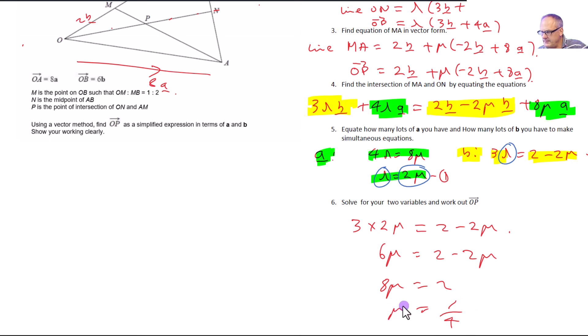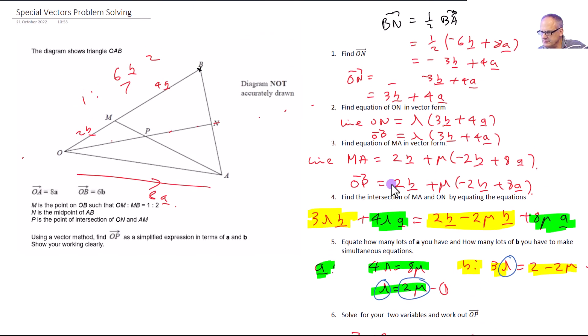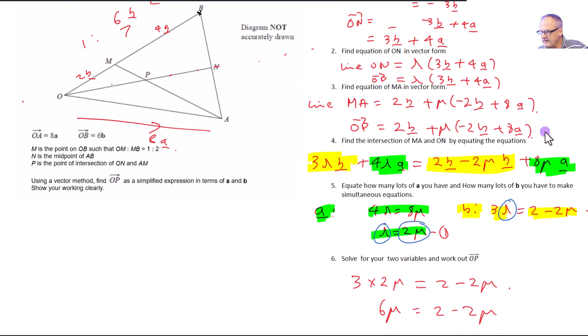So I can put that mu back into my equation, which is based on mu, so this one here, and find out OP. So OP must equal 2B plus a quarter times minus 2B plus 8A, and we can simplify that. So a quarter minus 2B is minus a half B. Take it away from the 2, I get 3 over 2B, or you might think of it as 1 and a half B. A quarter of 8 is 2A.